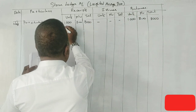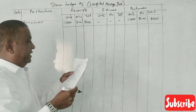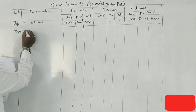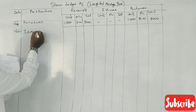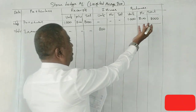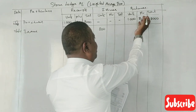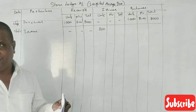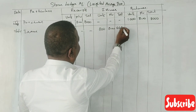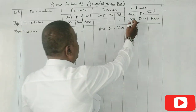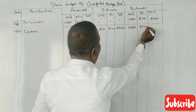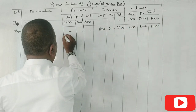1,000 units only. 800 units issued, so 200 units remain at ₹8 rupees — balance ₹1,600.